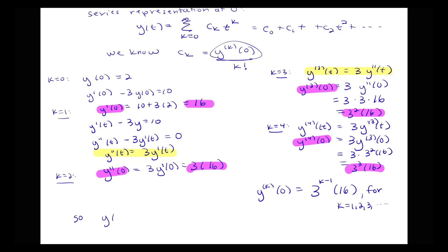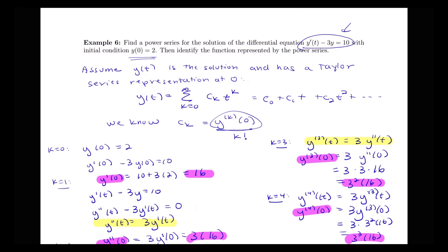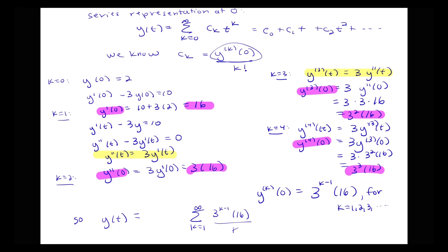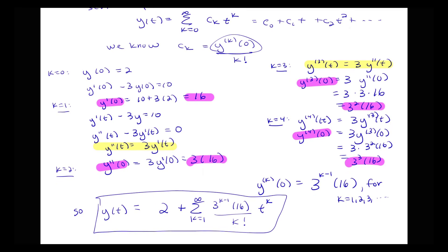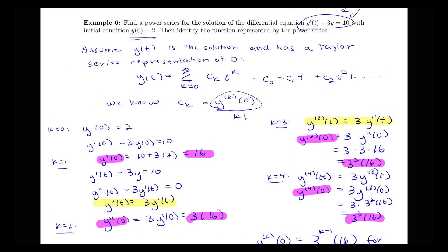Now we have a formula for our k-th derivative at 0, so we can write the power series that satisfies the differential equation. The series equals the sum from k equals 1 to infinity of 3 to the (k minus 1) times 16, divided by k factorial, times t to the k. For k equals 0 we just have 2, so y(t) equals 2 plus this sum.